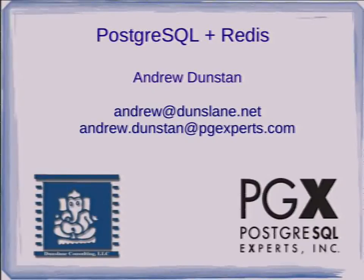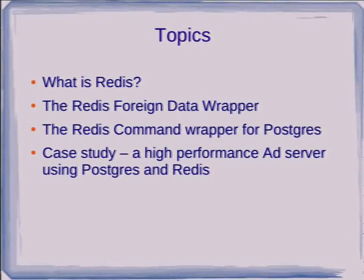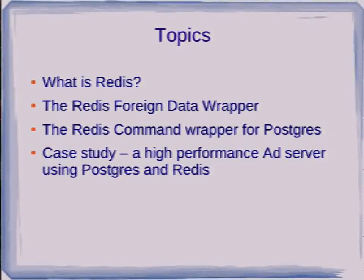So we're going to talk about Postgres and Redis. Here's basically what we're going to cover: we're going to talk a bit about what Redis is and how it works, then we'll take a look at the Redis foreign data wrapper, then we'll look at a companion package which wraps the Redis command API, and finally we're going to look at a case study of a high-performance ad server based on a combination of Postgres and Redis and uses these utilities.